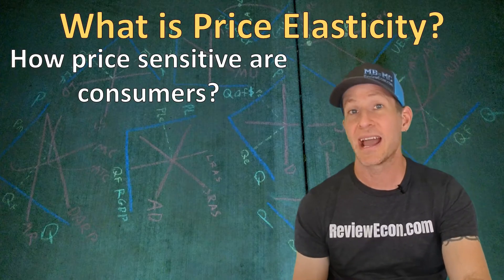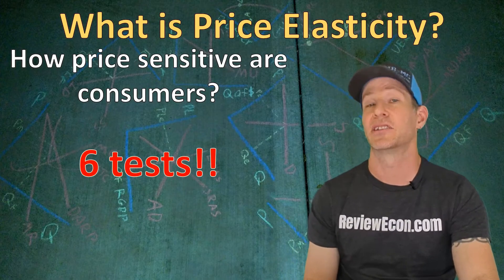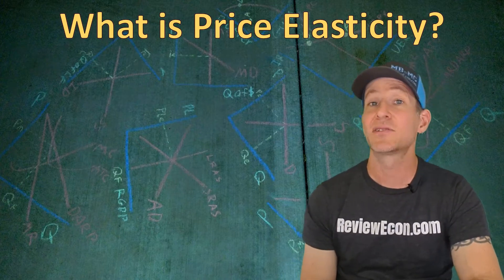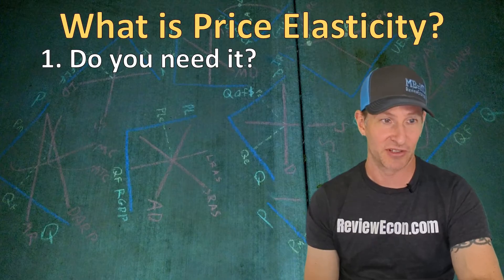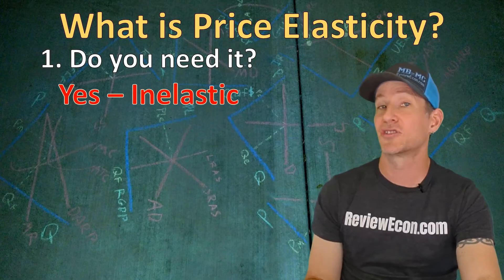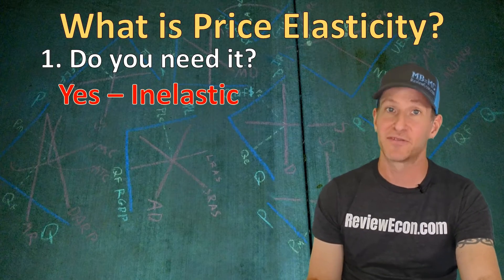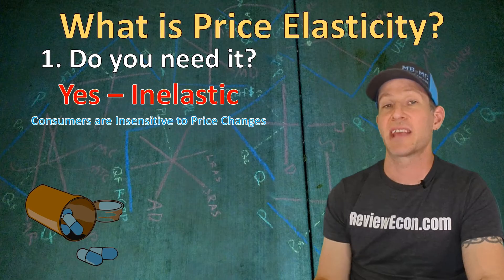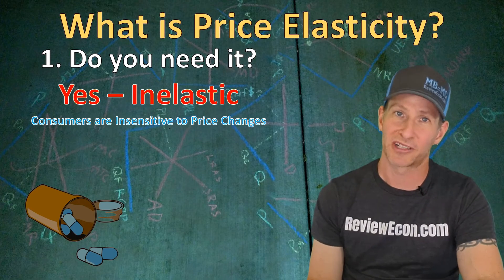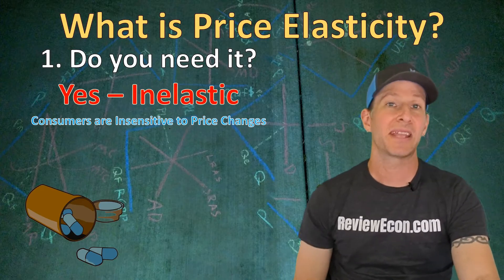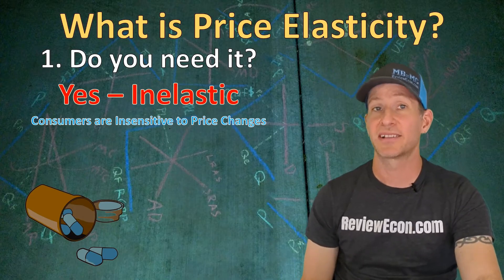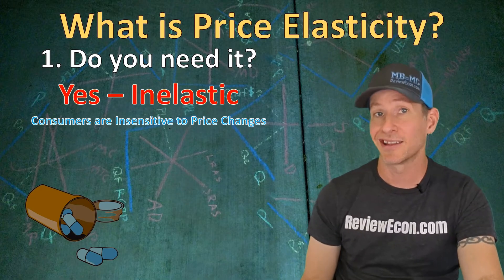When it comes to the price elasticity of demand, we have six tests for determining that elasticity. The first test is whether or not the product is a necessity. If consumers need a product, the demand is going to be price inelastic — consumers are insensitive to a price change. Lifesaving drugs have inelastic demand because when prices increase, consumers buy approximately the same amount. But goods that are not necessities will have elastic demand, meaning consumers are more sensitive to price changes and will buy a lot less when prices increase. Cookies and other desserts have elastic demand.